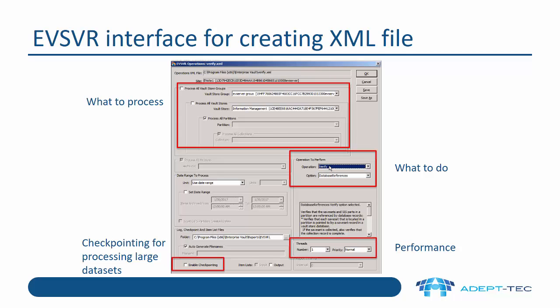In the top part of the interface, you can see what to process. You need to decide whether you want to process everything — i.e. all your Vault Store groups — or just specific Vault Store groups, Vault Stores, or partitions, and you can select as appropriate. Next, we have what to do. There are three operations: Report, which will tell you things like how many save sets there are on a Vault Store partition; Verify, which you use if you want to verify whether all the database references are there when the Vault Store databases and the Vault Store partition are out of sync; and Repair.